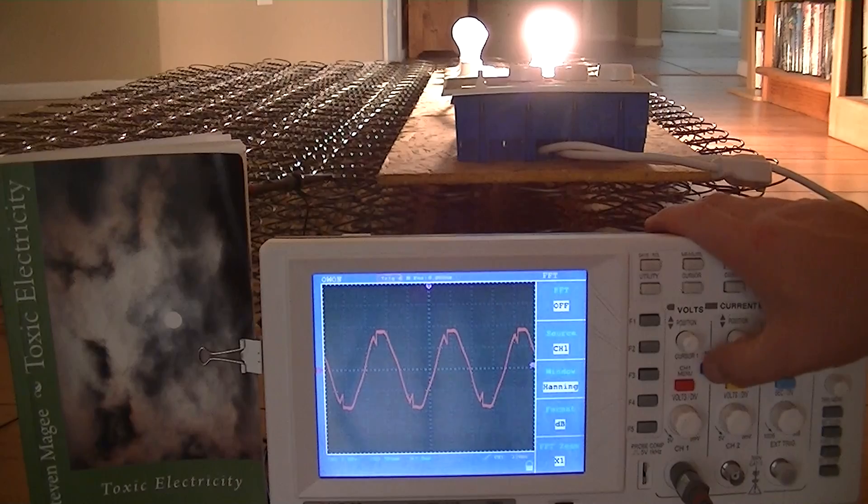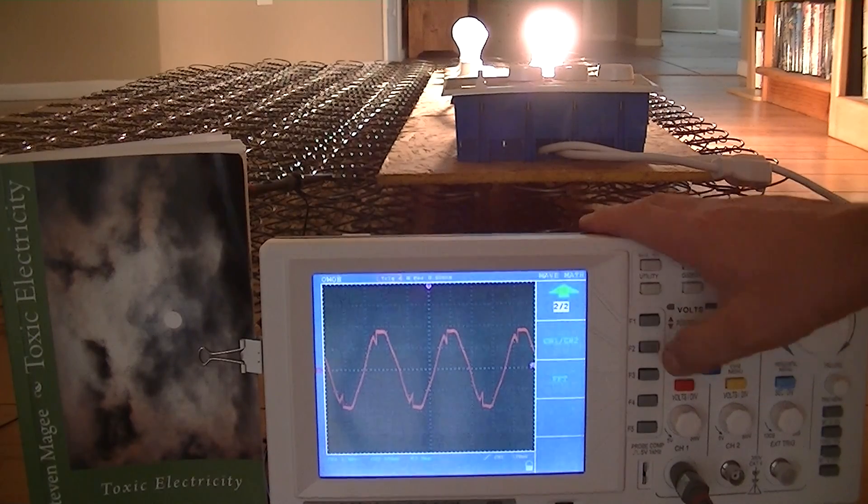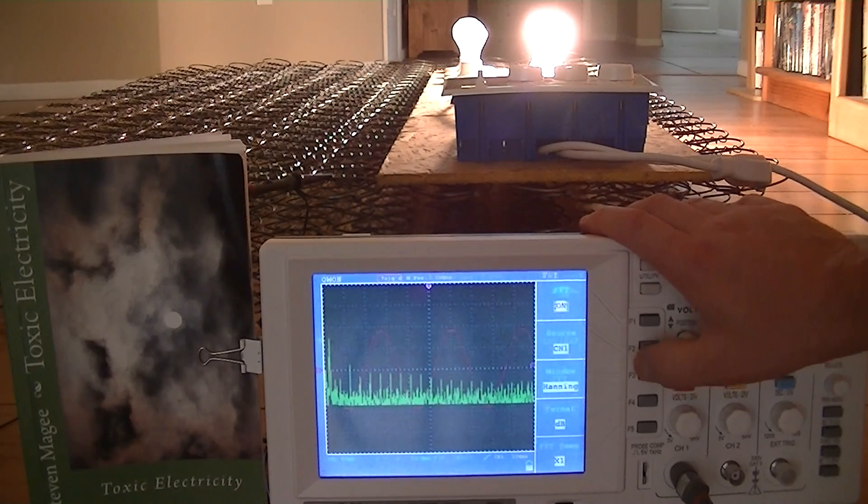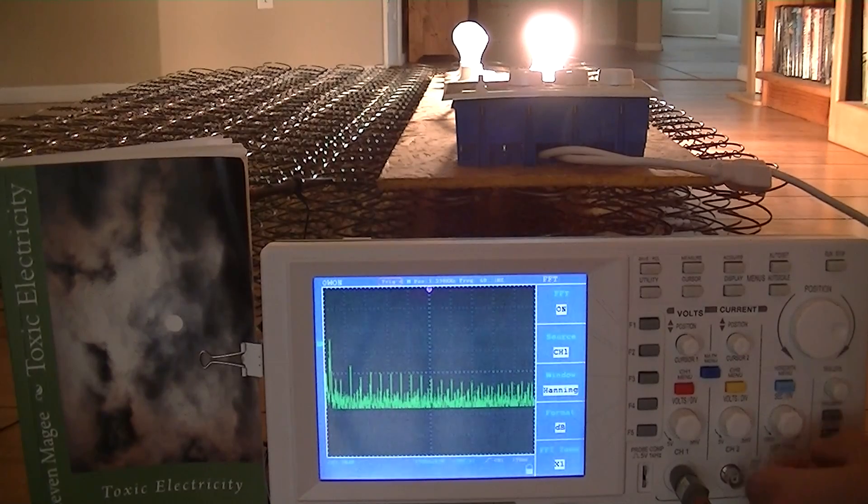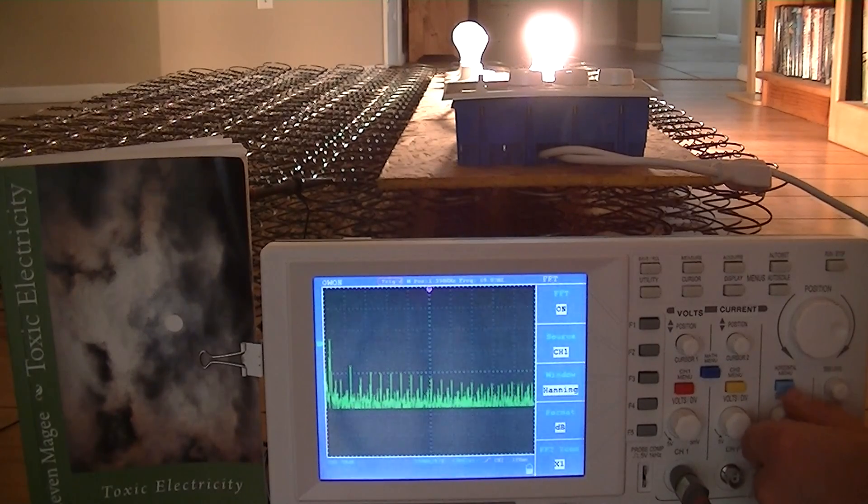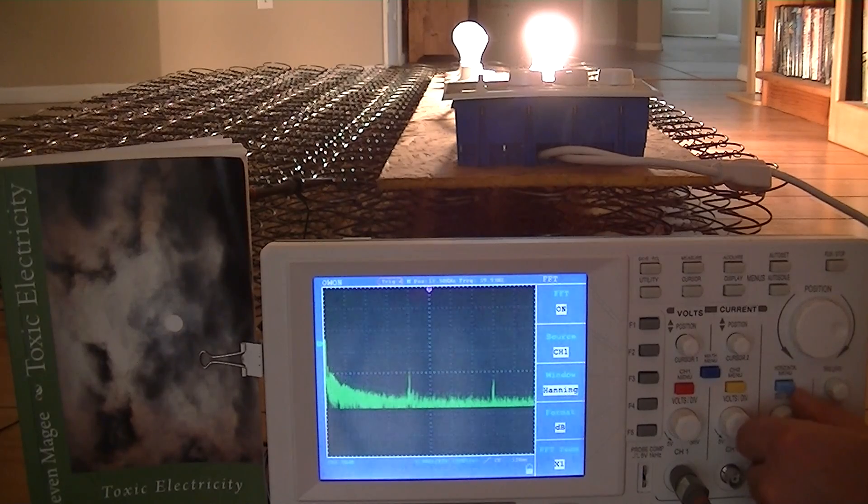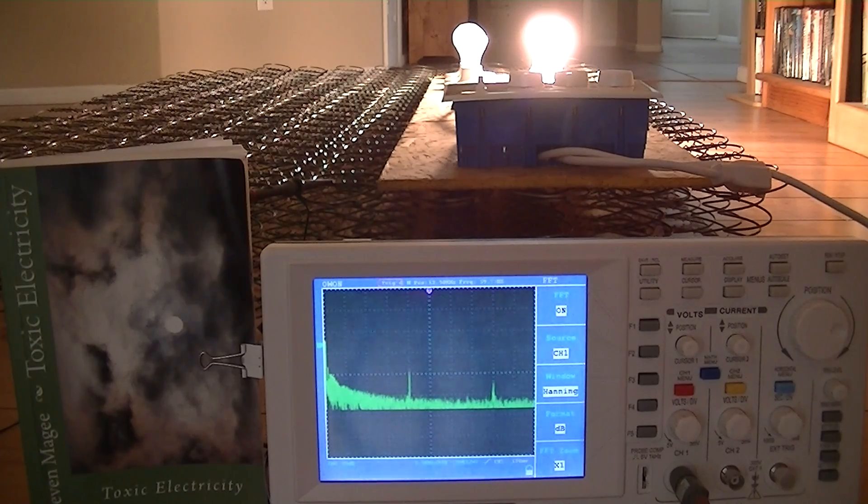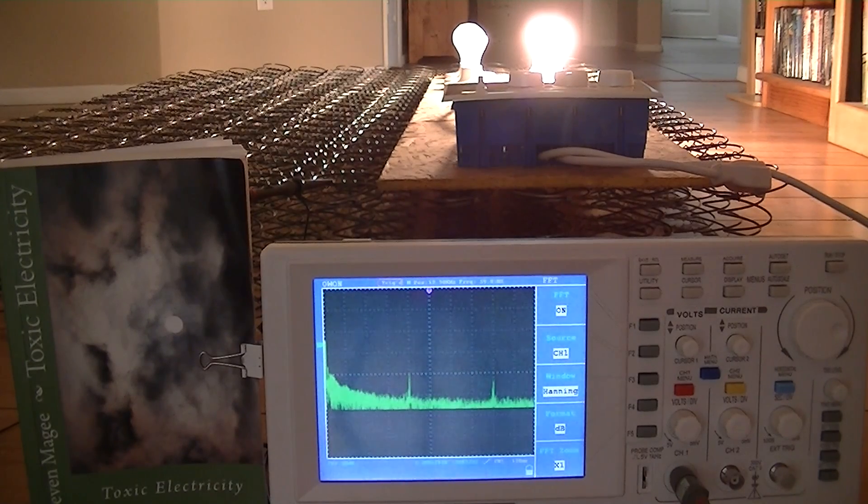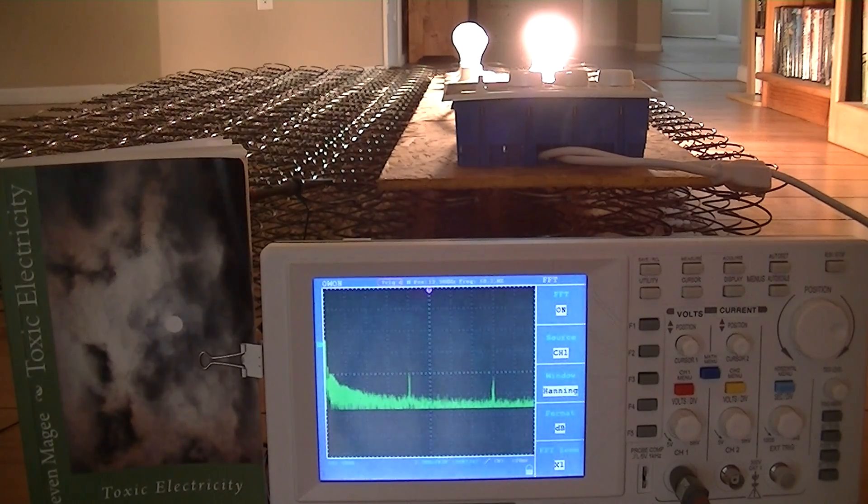If we switch over to the harmonic analyzer, the fast Fourier transform, what I'm going to do is I'm going to actually extend out the time base on this so we can get the full range of what's going on here. So we actually have a time base now of two and a half kilohertz per division.